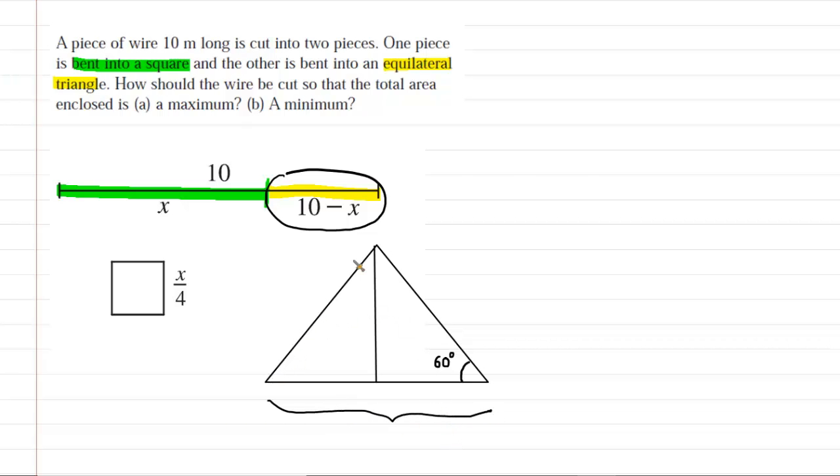Let's say we wanted to figure out the length of just this side of the equilateral triangle. We would have to take that total perimeter of 10 minus x and then divide it by 3, because there are three sides. So this side of the equilateral triangle becomes 10 minus x, all divided by 3. That's basically the base of the equilateral triangle.